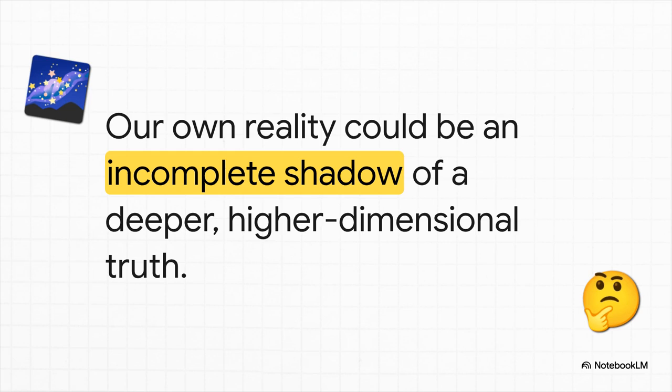And here is the absolute key takeaway. The weirdness wasn't in the sphere itself. The sphere is a simple, normal object. The weirdness was entirely in the limited perspective of the flatlanders. So the analogy asks, what if the paradoxes in our world, things like quantum weirdness or the mystery of time, what if they're not actually paradoxes at all? What if they're just the shadows of a higher, simpler reality that we can't see directly?